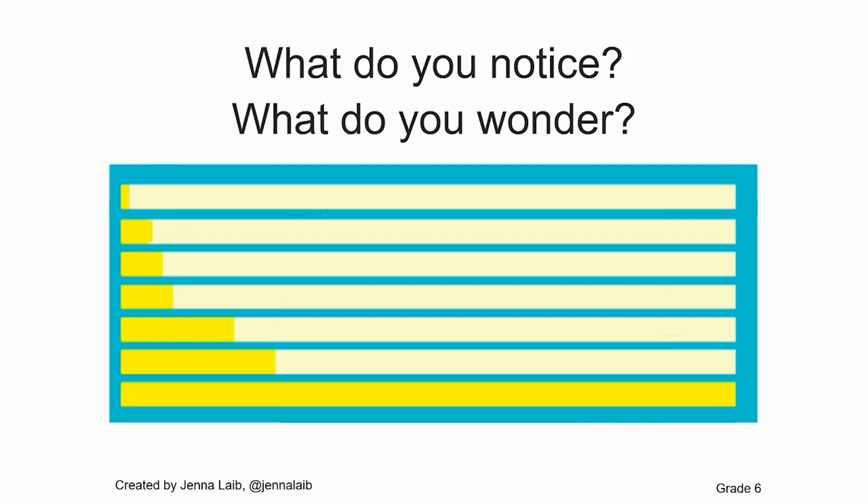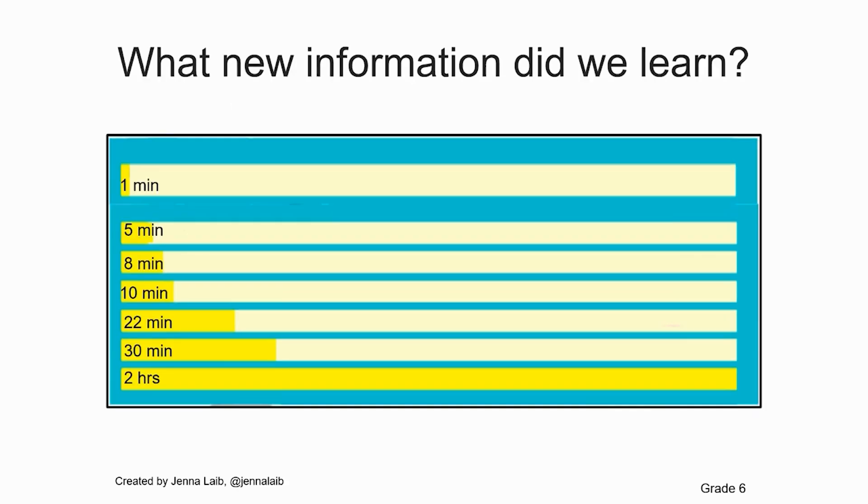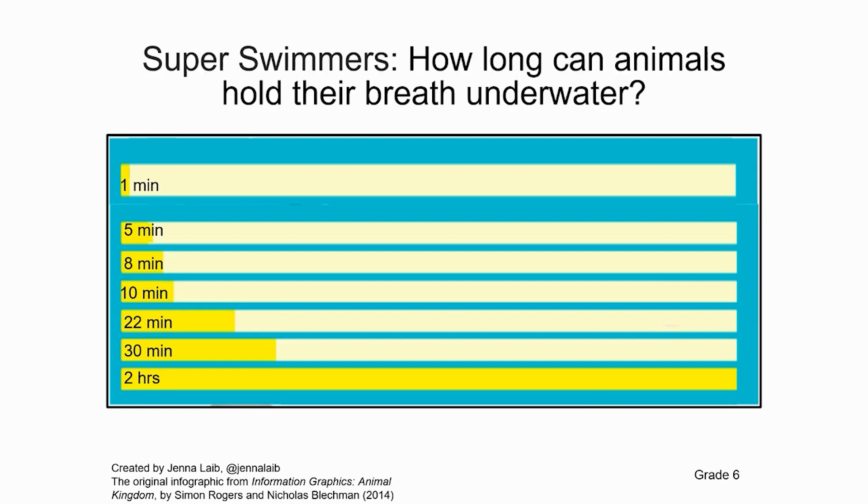You might have noticed that these yellow bars are in order from least to greatest, starting at the top and working downward. You might have noticed that the last bar is the only one that has over half of the entire row shaded in. You might be wondering, what do those yellow bars represent? What new information did we just learn? Does any of it surprise you? What do you think this graph might be about?